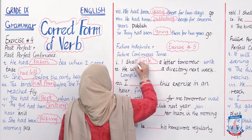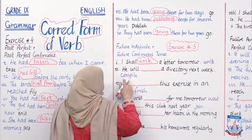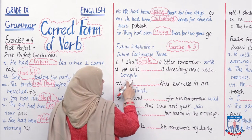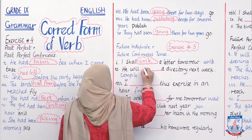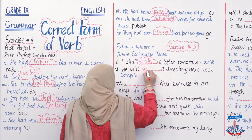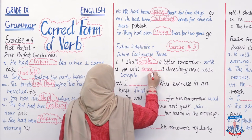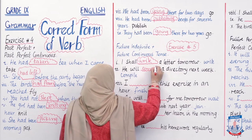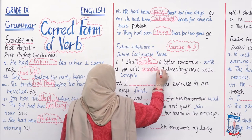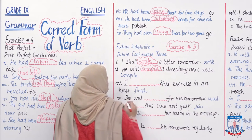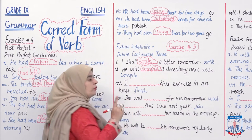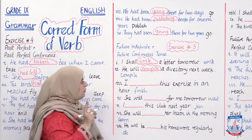'He will ___ a dictionary next week.' Answer: 'He will compile a dictionary next week.' Something that he will do — not 'will keep on doing.' It is a simple, single future action.